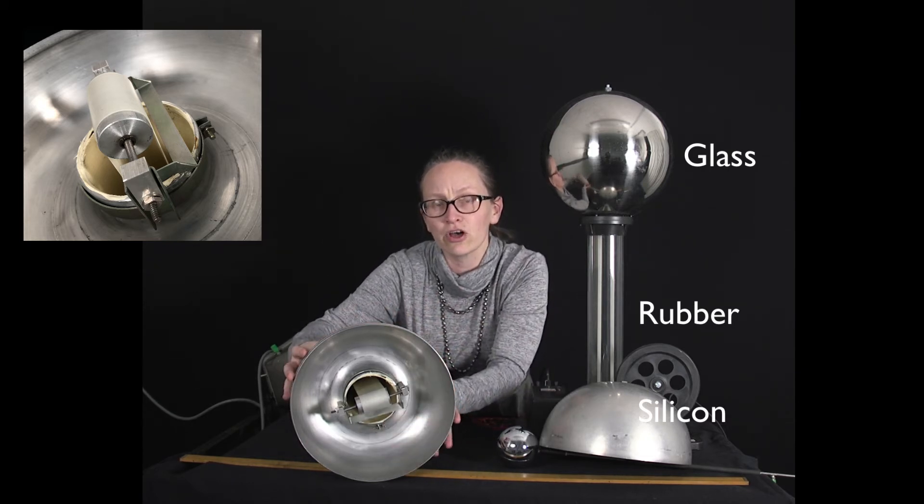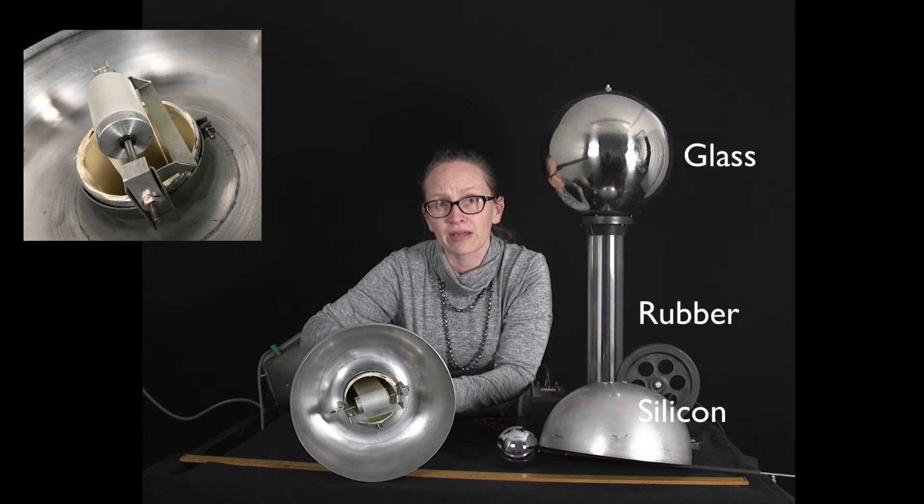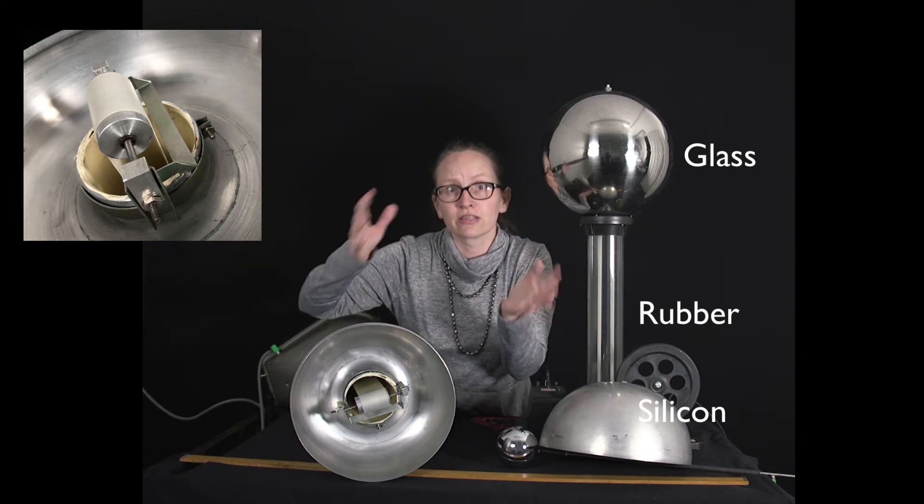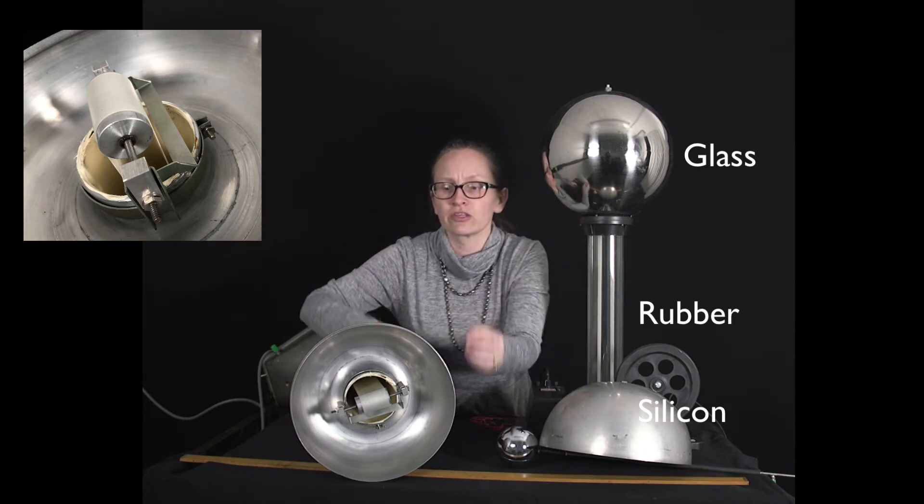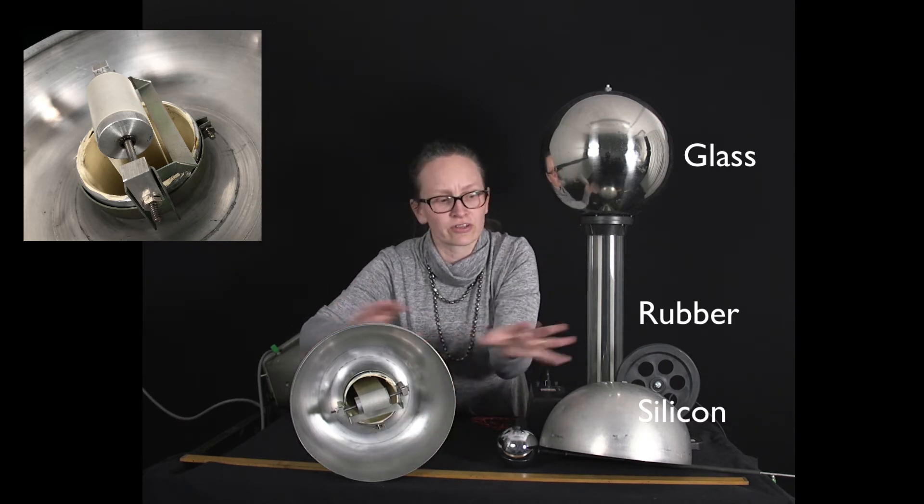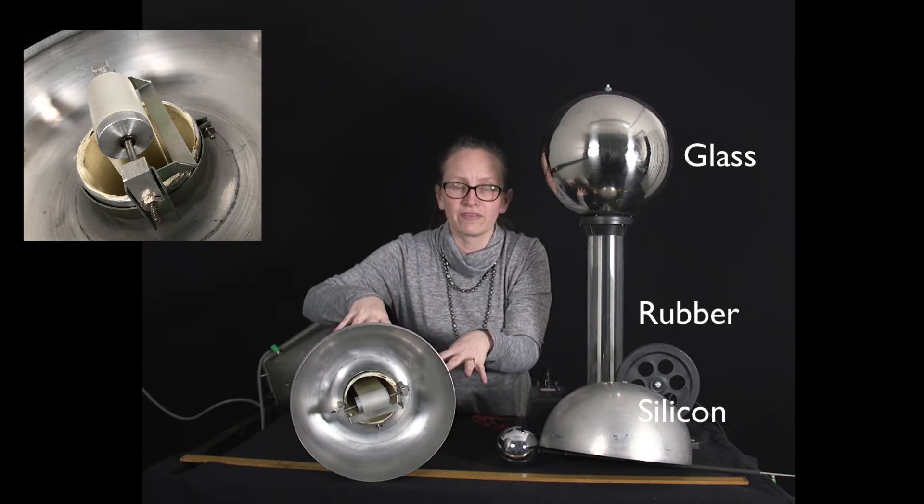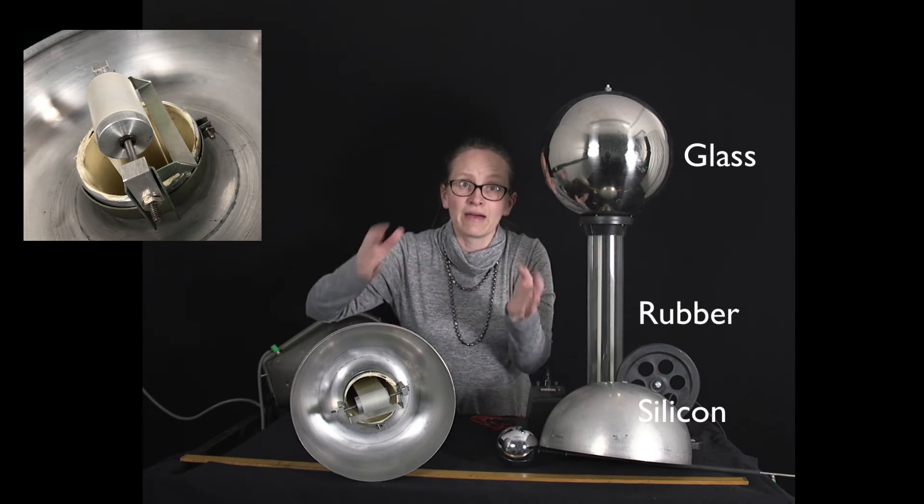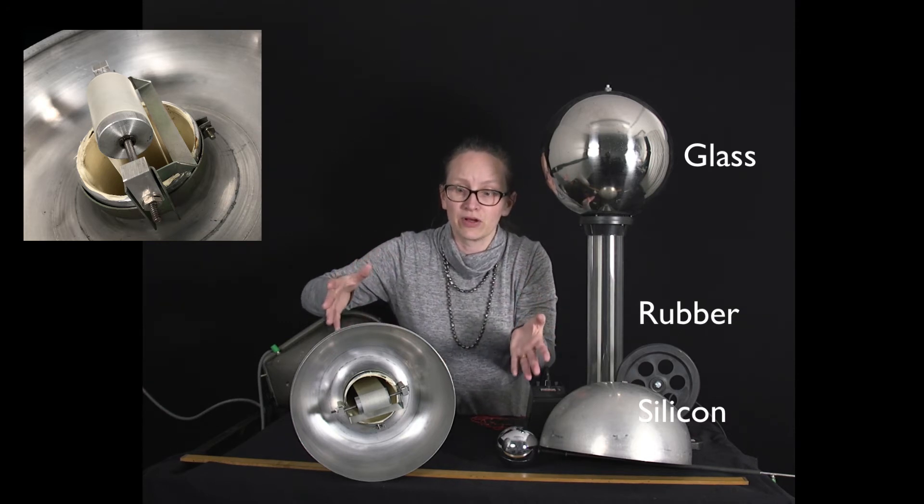However, the ball around the top which is connected to that metal strip is neutral. So when the strip along here becomes negative, it's pulling the electrons out of the ball on top of the Van de Graaff generator and that ball hence becomes positive.